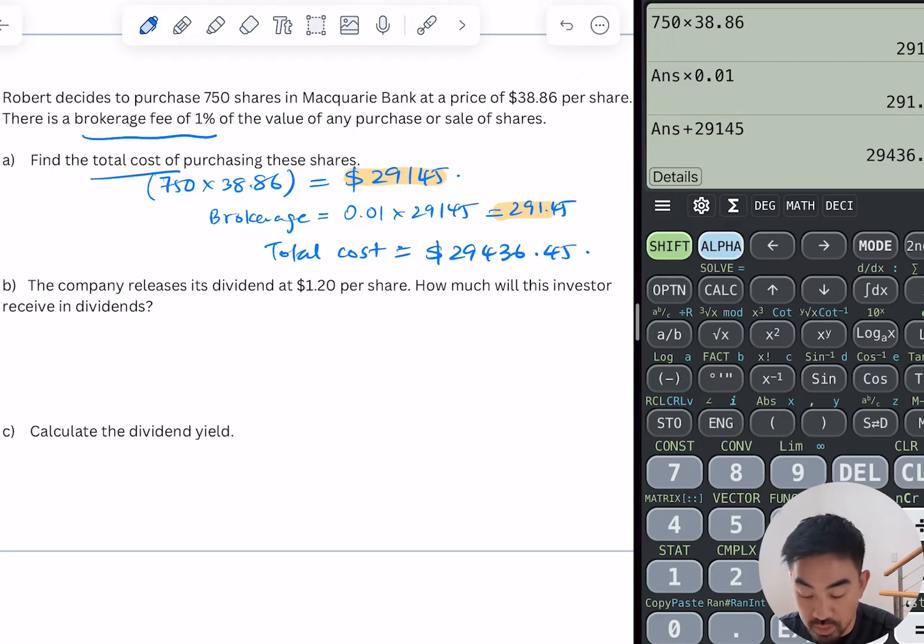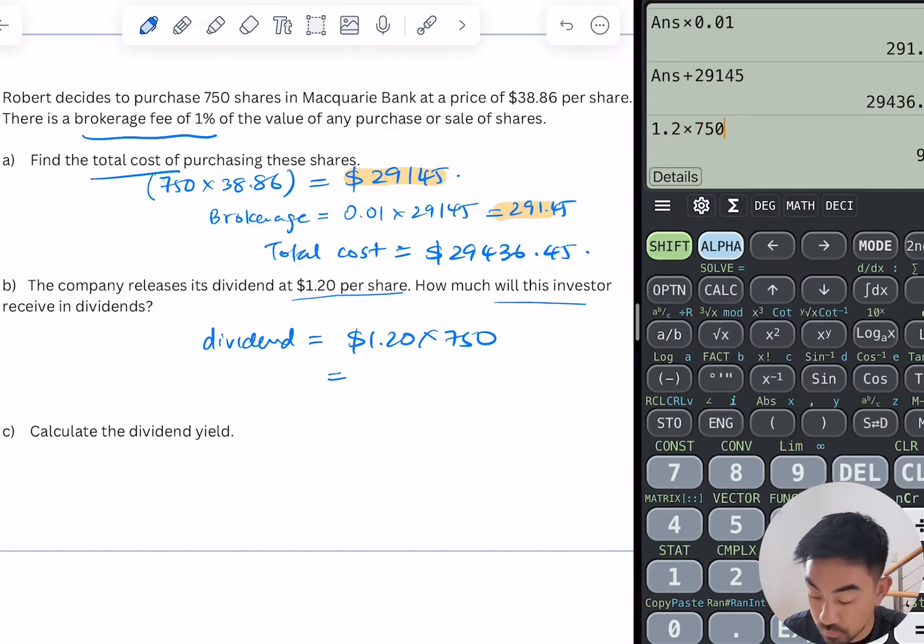Okay, question B. The company releases its dividend for $1.20 per share. How much will this investor receive in dividends? So he's basically getting $1.20 for every share he owns, so it's pretty straightforward. So his dividend will be $1.20 times the number of shares he has, which is 750. So his dividend will be $900.